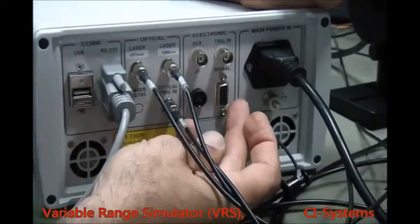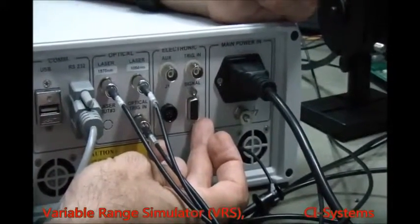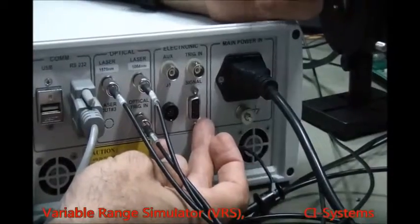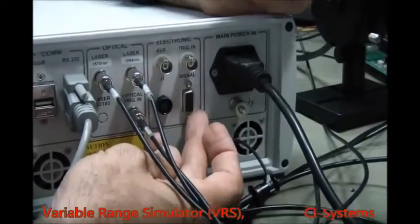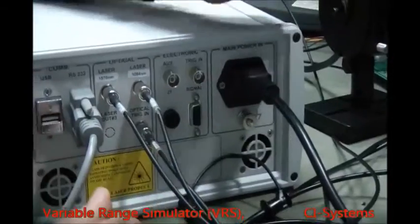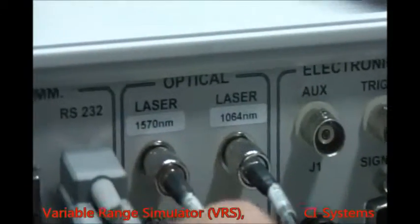Or, in other cases, you want to use an electronic trigger. If you don't have any kind of laser and you just want to see the system is working or your receiver is working, you can control the unit by some sort of electronic pulses or electronic signals.